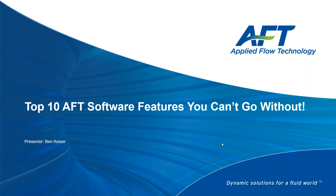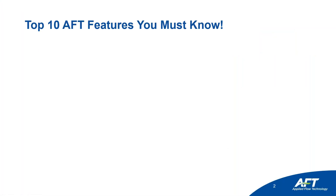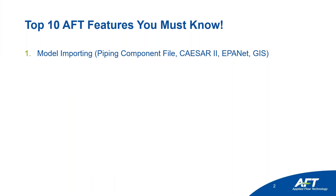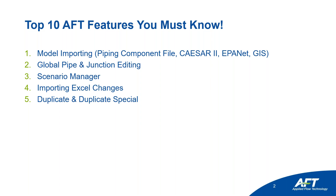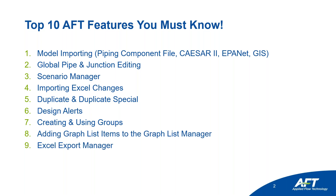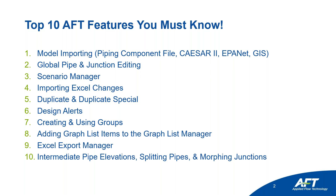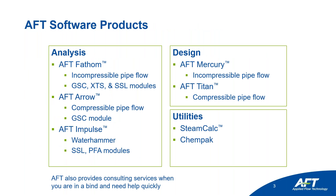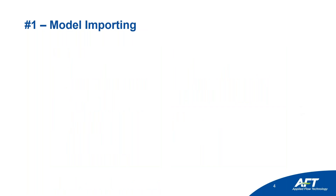Here are the top 10 features for today: number one, model importing of neutral file formats; number two, global pipe and junction editing; number three, the scenario manager; number four, importing Excel changes; number five, duplicate special; number six, design alerts; number seven, creating and using groups; number eight, adding graph list items to the graph list manager; number nine, the Excel export manager; and number ten, intermediate pipe elevations, splitting pipes, and morphing junctions. I'll be demonstrating everything in Fathom, but it all applies directly to AFT Arrow and AFT Impulse.